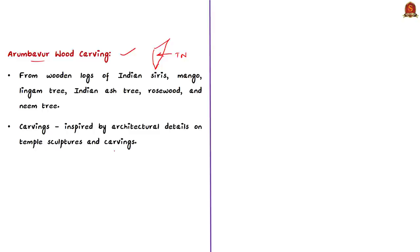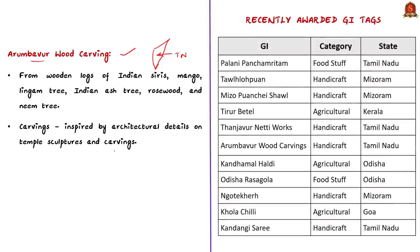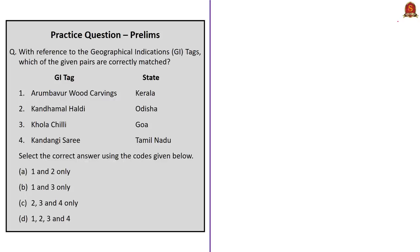In addition to this information, recently GI tagged products are given in the table for your reference. With this information, let's take up the given question. Four pairs are given and you have to choose the correct pair. The first pair — Arumbavur wood carvings matched with the state of Kerala — is an incorrect pair, as Arumbavur is in Tamil Nadu. If the first pair is incorrect, then automatically options A, B, and D will be incorrect. So the correct answer is option C, 2, 3, 4 only.